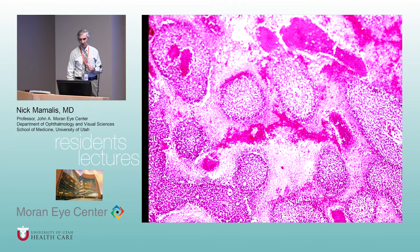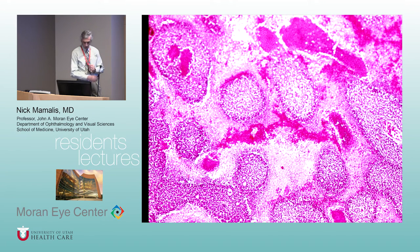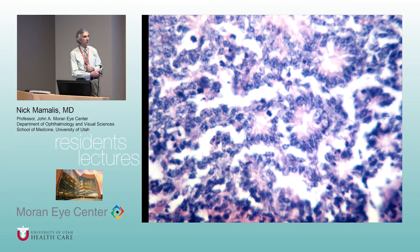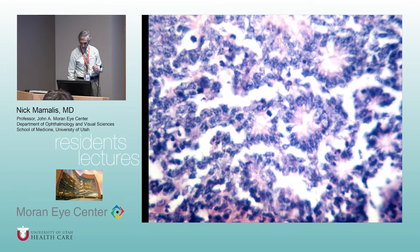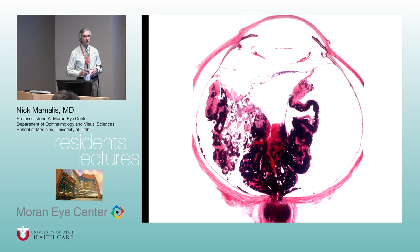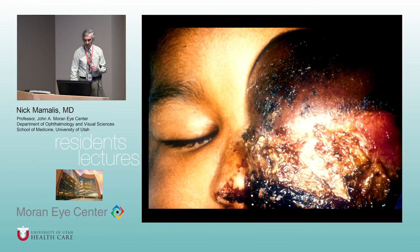Retinoblastoma: you see viable tumor cells, necrosis, and calcification. The characteristic rosettes are Flexner-Wintersteiner rosettes — classic for retinoblastoma. When retinoblastomas spread from the eye, they spread through the optic nerve.